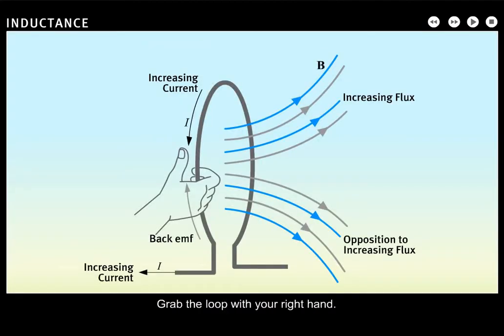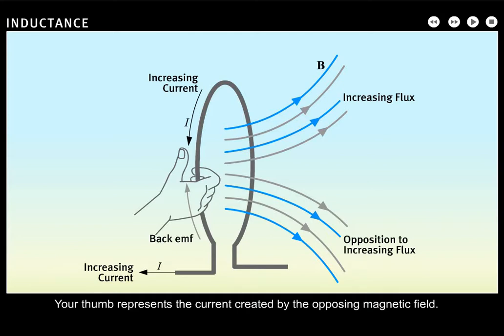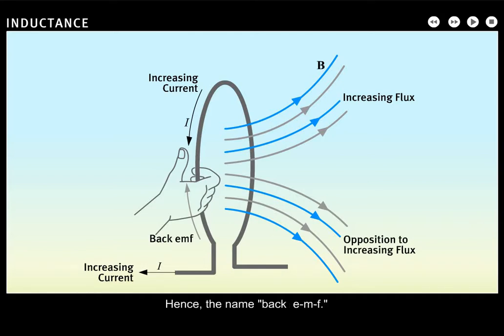Grab the loop with your right hand. Your fingers point through the loop in the direction of the opposing magnetic field. Your thumb represents the current created by the opposing magnetic field. Notice that your thumb points opposite the direction of the primary current — hence the name back EMF.